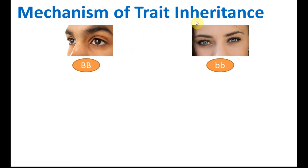Mechanisms of trait inheritance. How does this inheritance occur? Let's say we have two genotypes — brown eyes and blue eyes — and both of these individuals carry pure genetic. This one has pure brown eyes and this one has pure blue eyes. Let's say they marry and reproduce. During reproduction, meiosis occurs and cell division occurs.